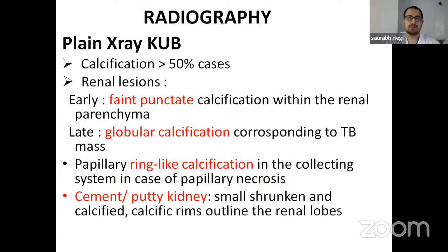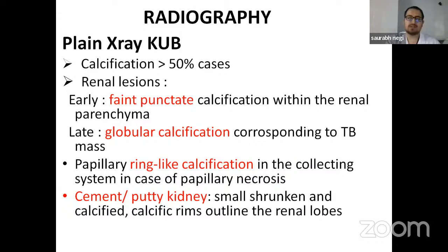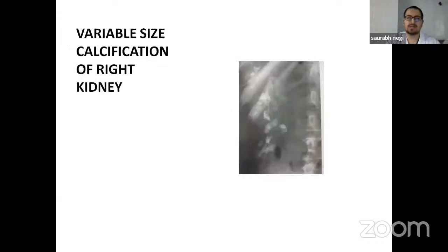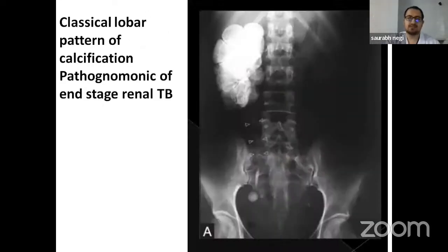In radiological examination, plain X-ray KUB shows calcification in more than 50% of cases. In early renal lesions, there is faint punctate calcification within the renal parenchyma. In late cases, there may be globular calcification corresponding to a TB mass, and papillary calcification in the collecting system in case of papillary necrosis. In end stages, there may be cement-putty kidney — a small, shrunken, calcified kidney with a calcific rim outlining the renal lobes. The X-ray shows the right kidney with variable-size calcifications, with a classical lobar pattern seen in end-stage renal TB, also known as a putty kidney.